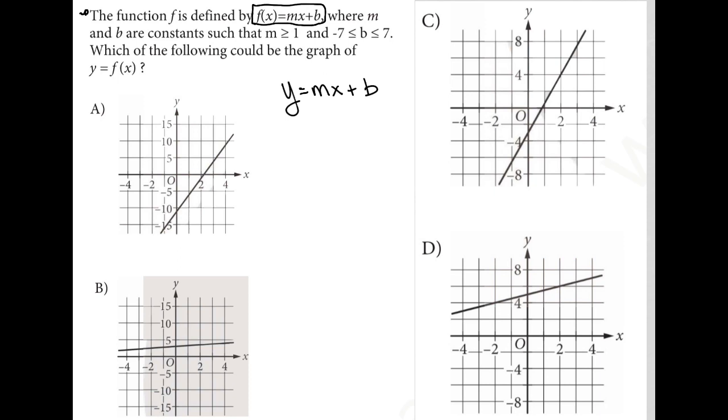Where m and b are constants such that m is greater than or equal to 1. I'll just write that m ≥ 1. And b is between -7 and 7. So I'm just going to say -7 to 7. This is where b is.